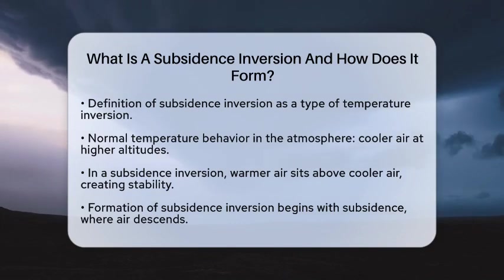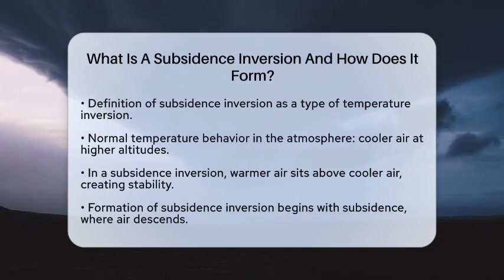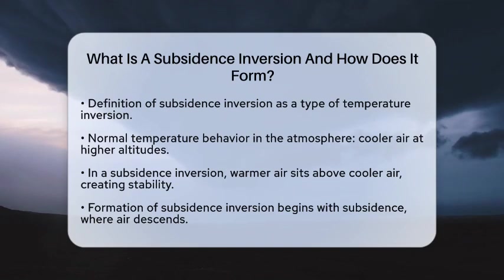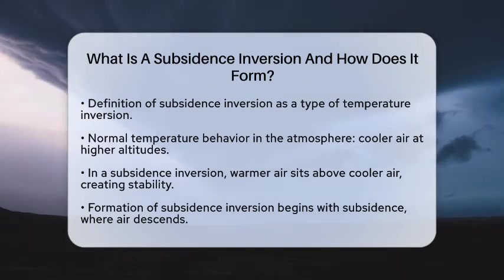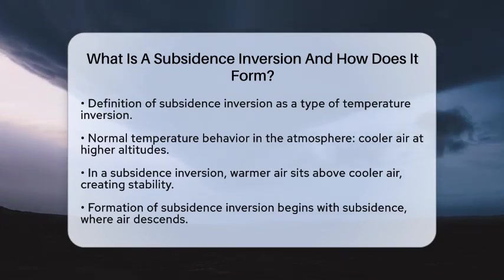So, what exactly is it, and how does it come about? A subsidence inversion is a specific type of temperature inversion. Normally, as you go higher in the atmosphere, the temperature drops. However, during a subsidence inversion, this pattern flips. Warmer air sits above cooler air, creating a stable layer.